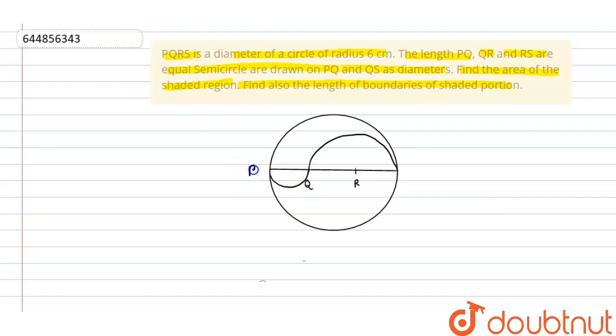According to the question, PQRS is given. We have to find the area. It is saying that PQ, QR and RS are equal semi-circles. Radius of PQRS is given 6 cm. So we can say that for semi-circle with diameter PS, diameter is PS and radius is given 6 cm.